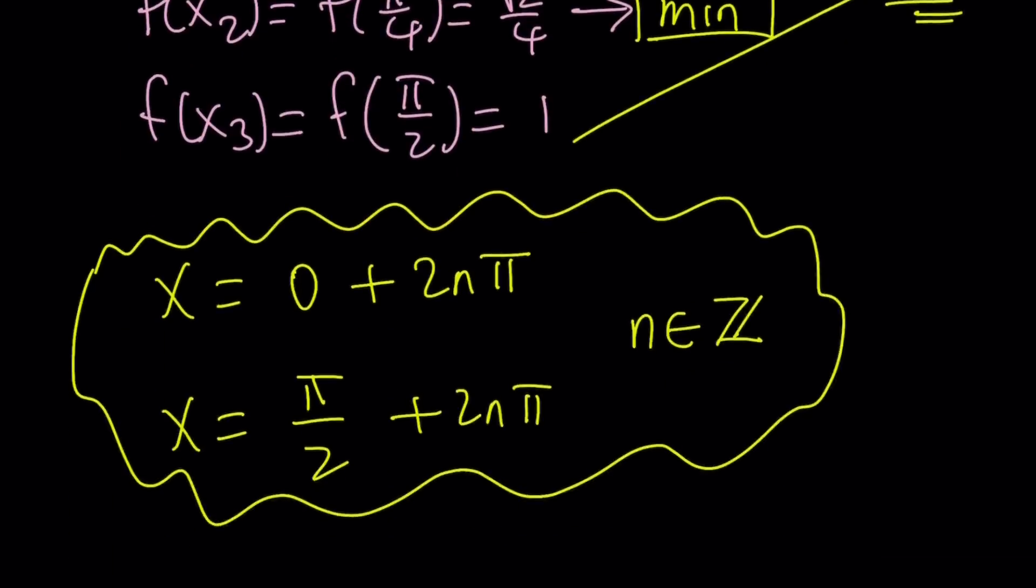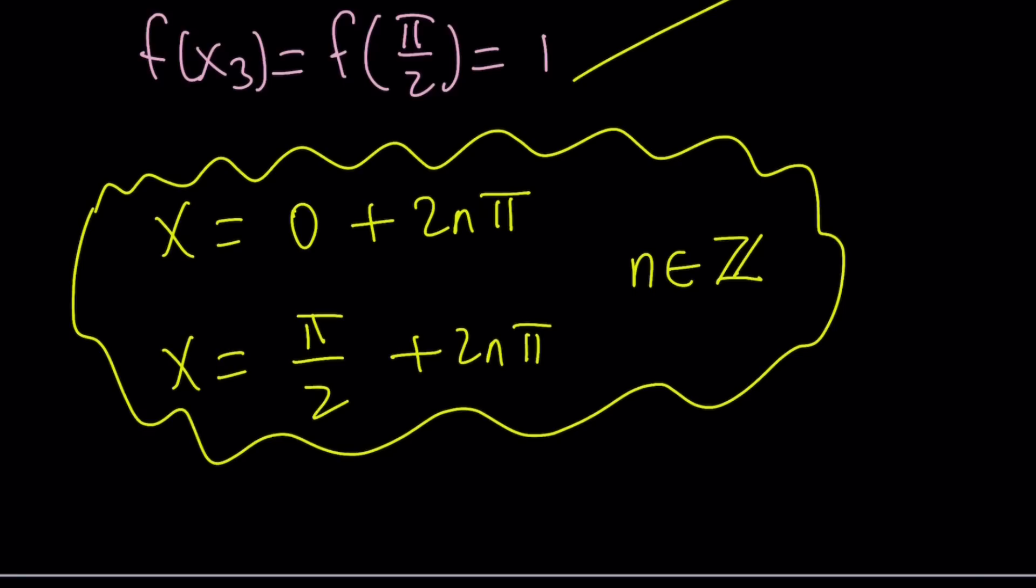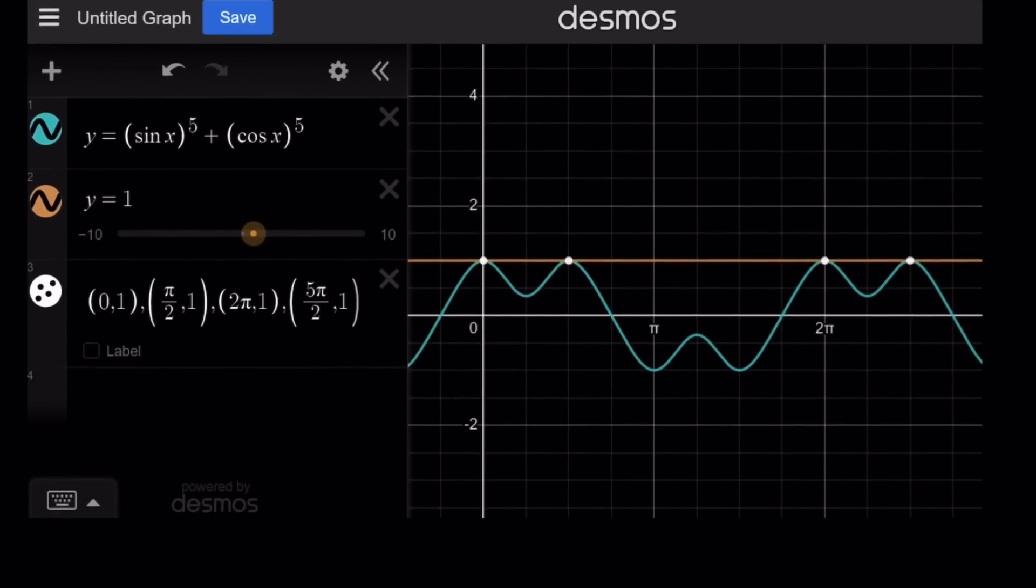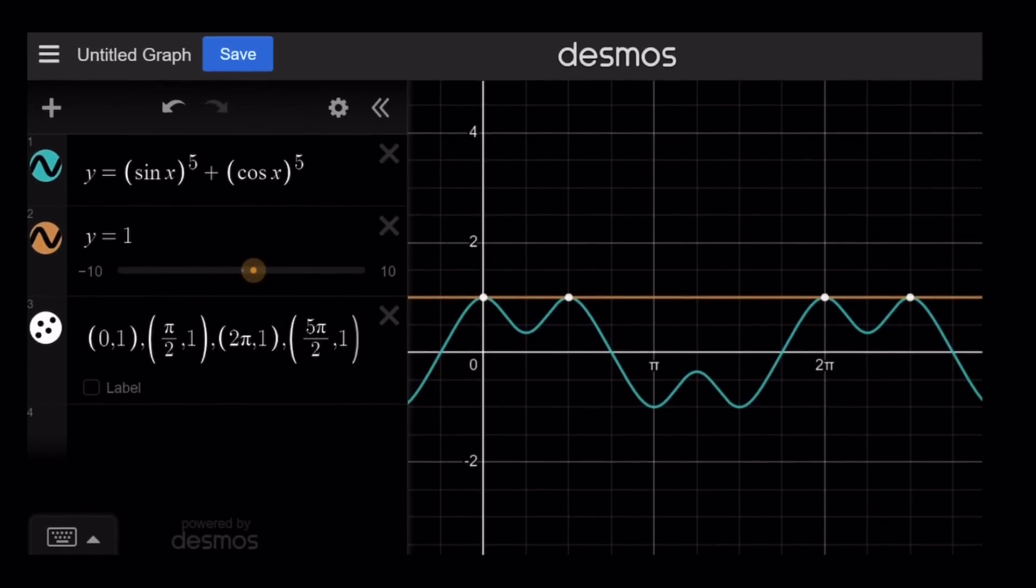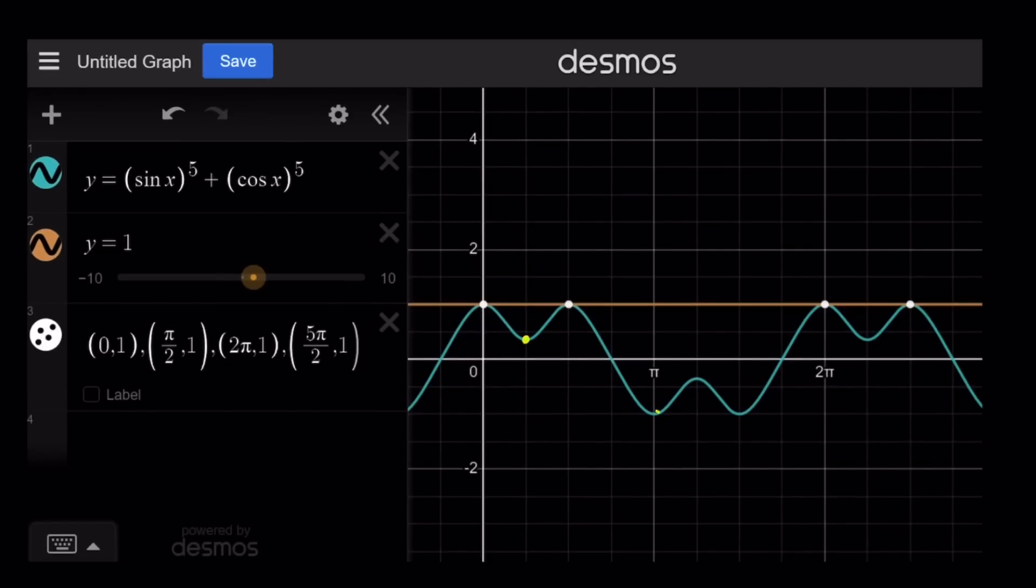So here's the graph of sine x to the 5th plus cosine x to the 5th. As you can see, it is tangent to the line y equals 1, because it takes the maximum value, so it's tangent. And you can also see the local minima here, here, and a couple other values, but those are going to be some of the solutions, and we already wrote the general solution. And this brings us to the end of this video.